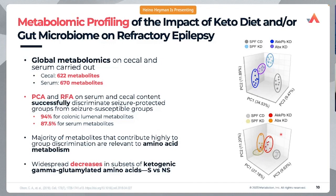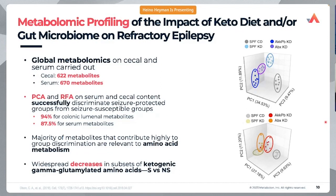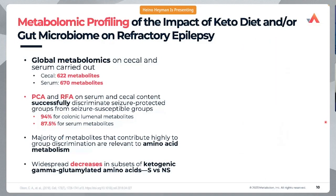With PCA and random forest analysis, the models were able to successfully discriminate between seizure protection and seizure susceptible groups. The colonic luminal metabolites were the more predictive ones with a 94% success rate, and serum metabolites at 87.5%. Quite nice levels and quite predictive models.